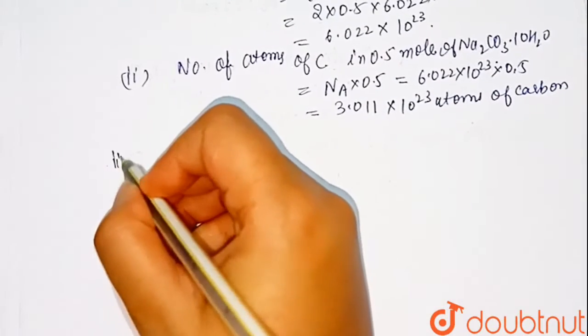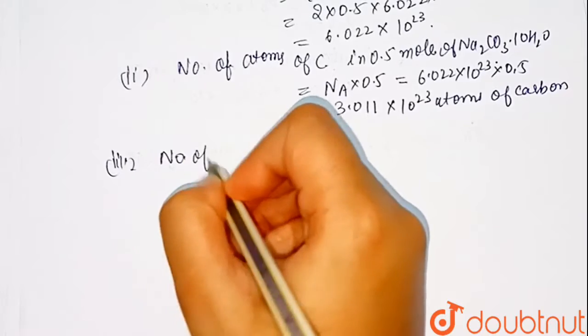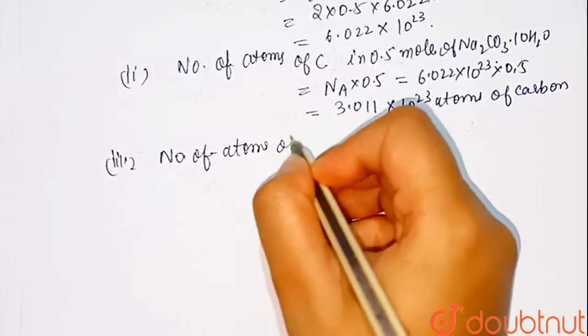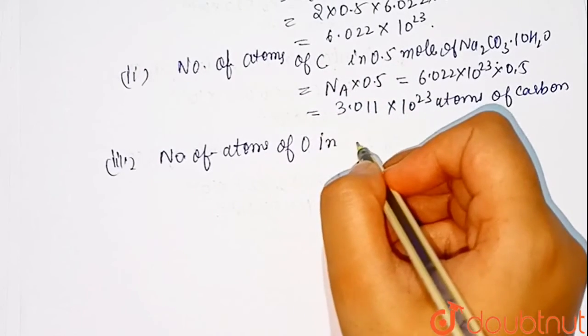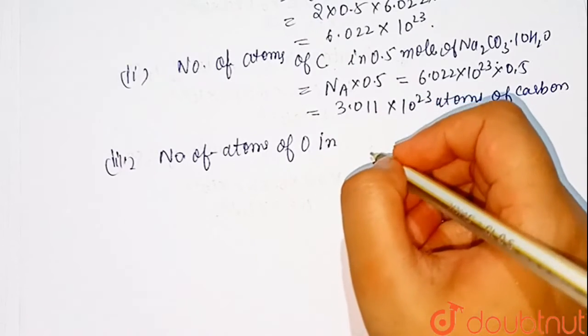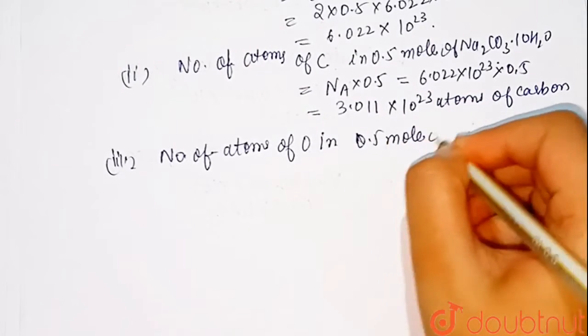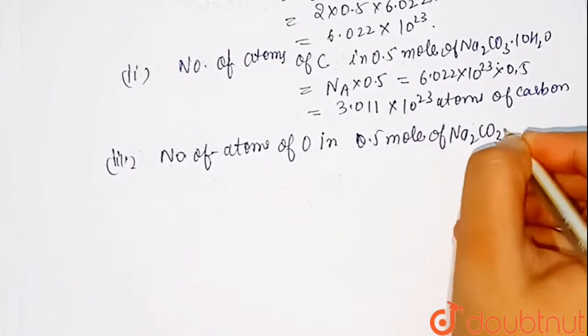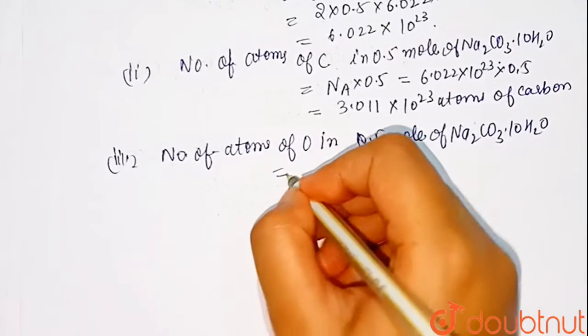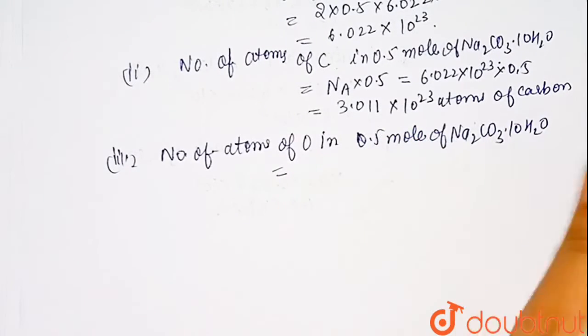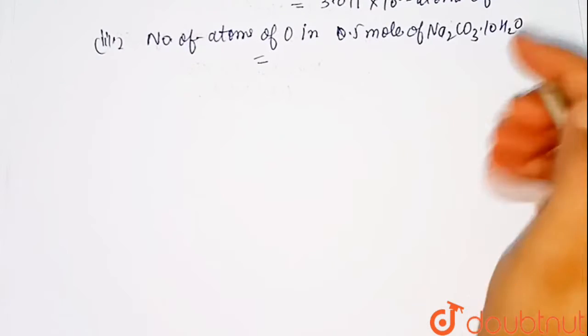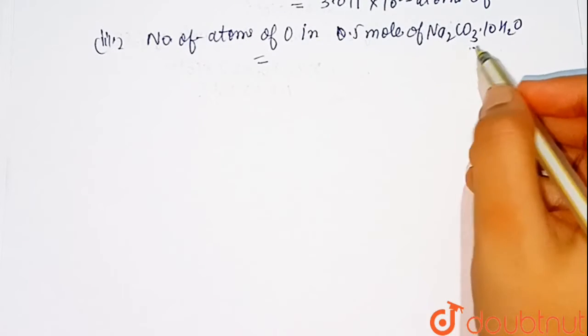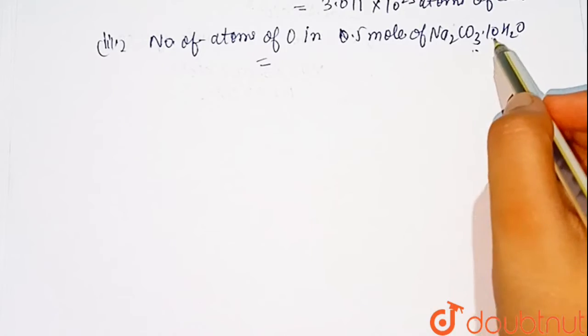Now, third is number of atoms of oxygen in 0.5 mole of NA2CO3.10H2O. As we see that there are 13 oxygen atoms, 10 here and 3 here.